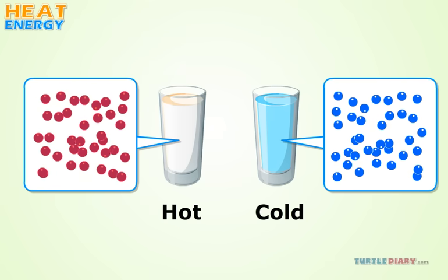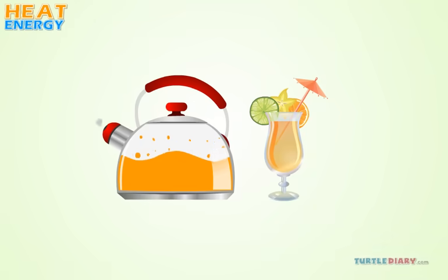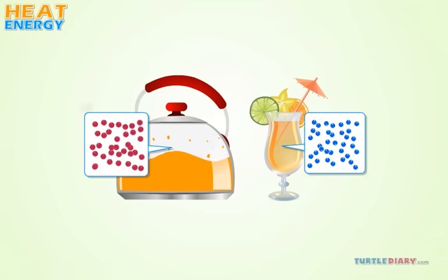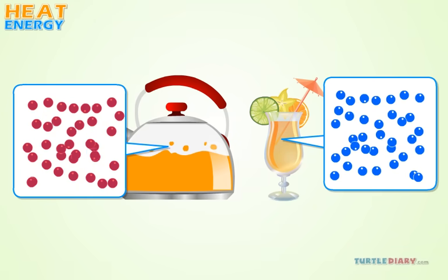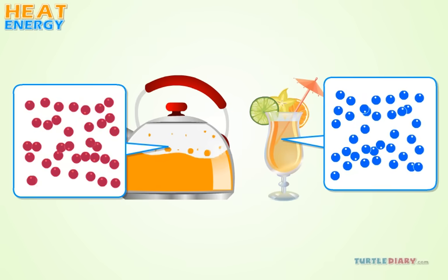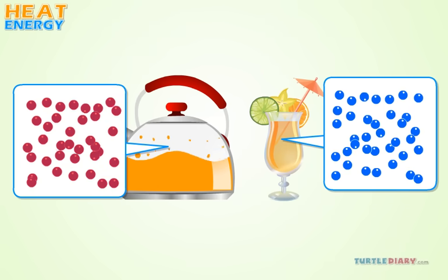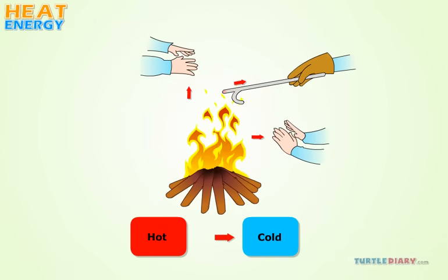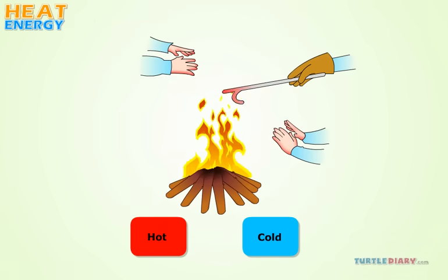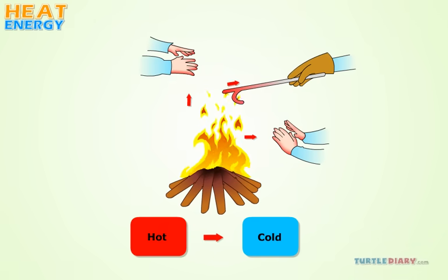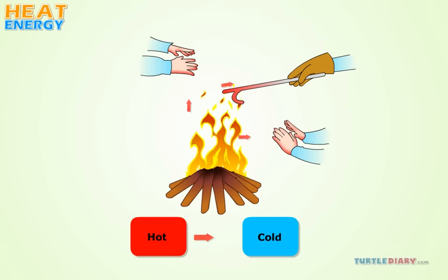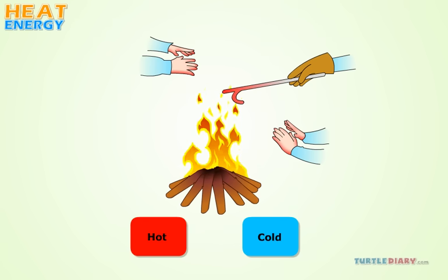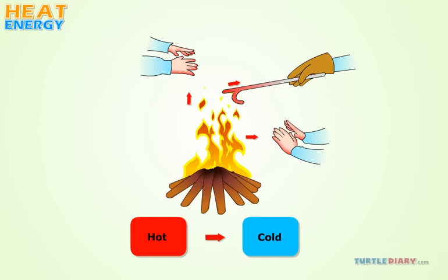For example, particles of hot water in a pot would vibrate very quickly, so they would contain lots of energy. Heat is actually a form of energy that is being transferred from a substance at a higher temperature to another substance or substances at a lower temperature.